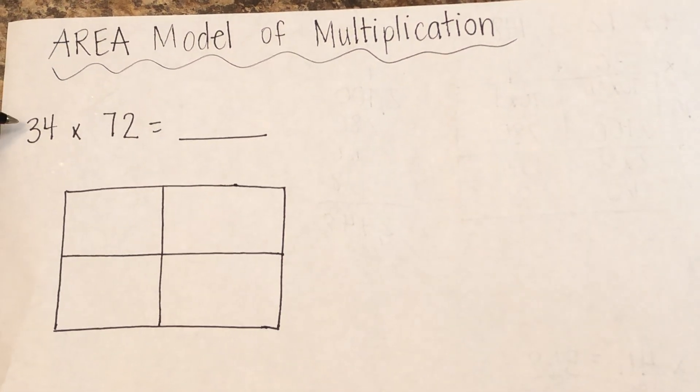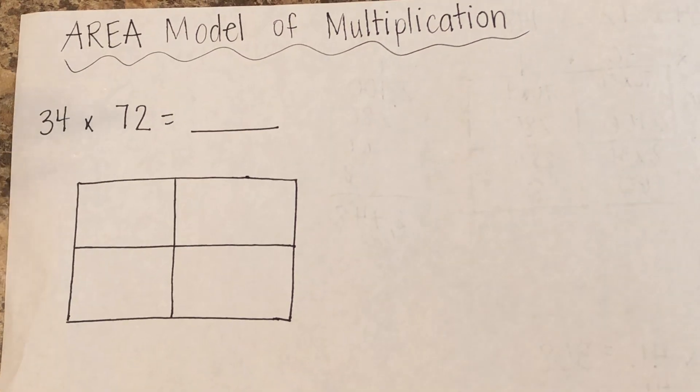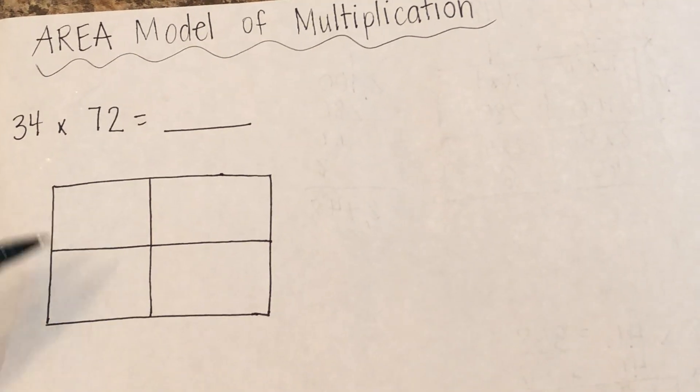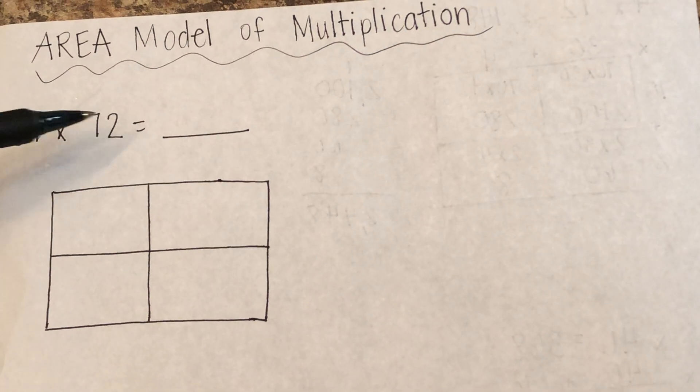So the first one, we have a two-digit number times a two-digit number. If we have a two-digit times a two-digit, you need two boxes on the top and two boxes on the bottom to show the two digits.